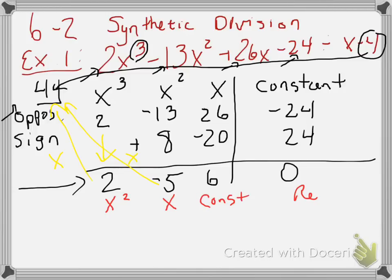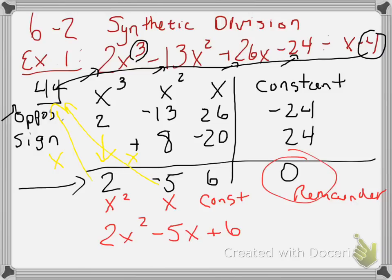The number next to it, over there in the corner, this is the remainder. Okay, so in this case, our remainder is 0. So to write our final answer, we'd have 2x² - 5x + 6.